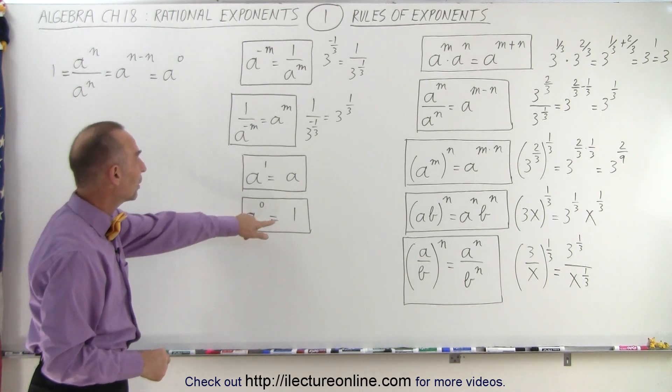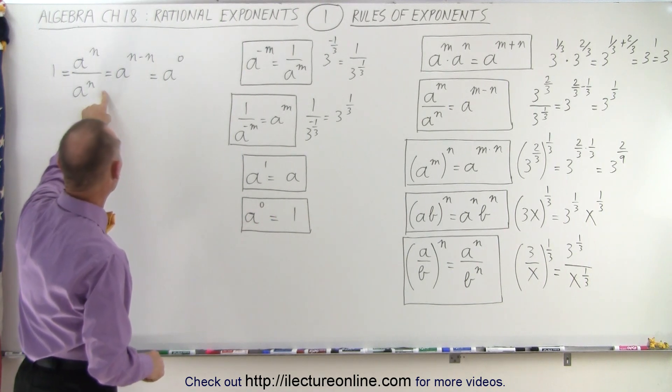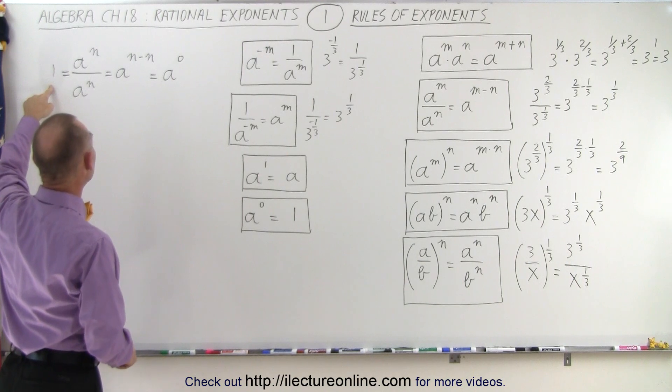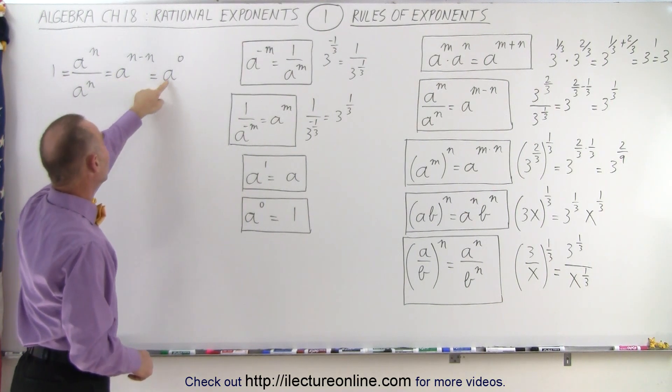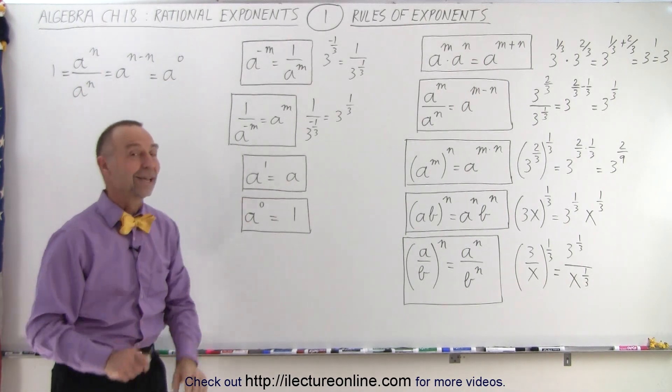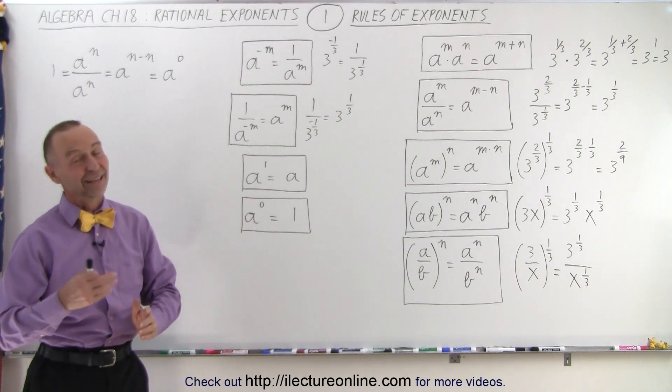Notice why is a to the zero equal to one? Well, we can write it like this. a to the n divided by a to the n equals one. And now you can see when we subtract exponents, we get a to the zero. So therefore, a to the zero must equal one, just in case you're wondering. And that is how it's done.